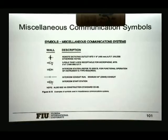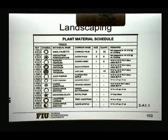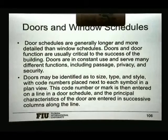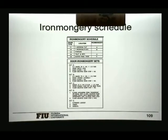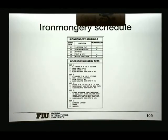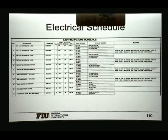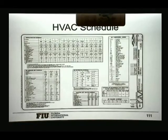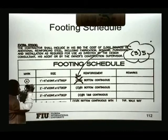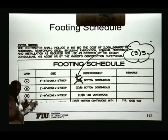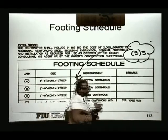We have schedules that show what type of finish you will have on different rooms. The iron mongery schedule gives you the schedule of materials — the hardware needed for different doors. The lighting fixtures schedule tells you what type of light you have, where it's used, and a lot of details. HVAC folding schedules are tables that give you information about different items in the drawing. Look for these drawings, look for these symbols, read the notes, read the legends, and make sure that you get familiar with this stuff.